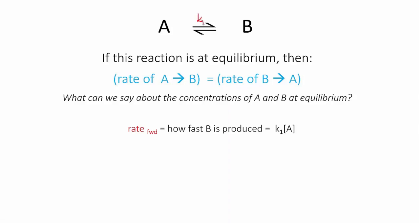And the reverse rate, the rate of the reverse reaction, that's how fast A is being produced, that's equal to a different rate constant, I'll call it K2, multiplied by the concentration of B, because B is the reactant here. So that's K2B.